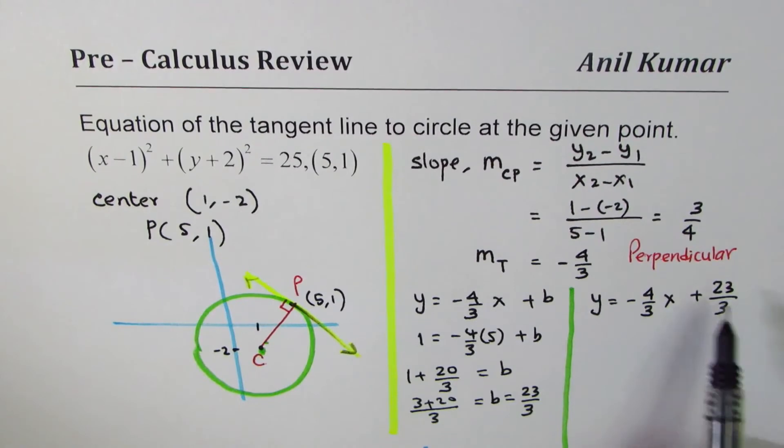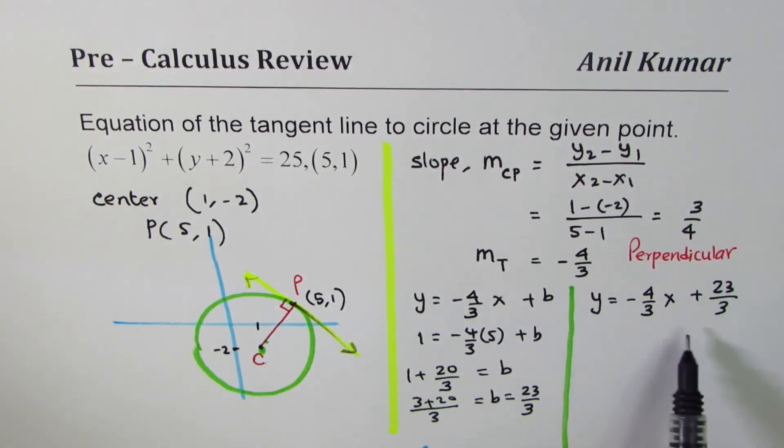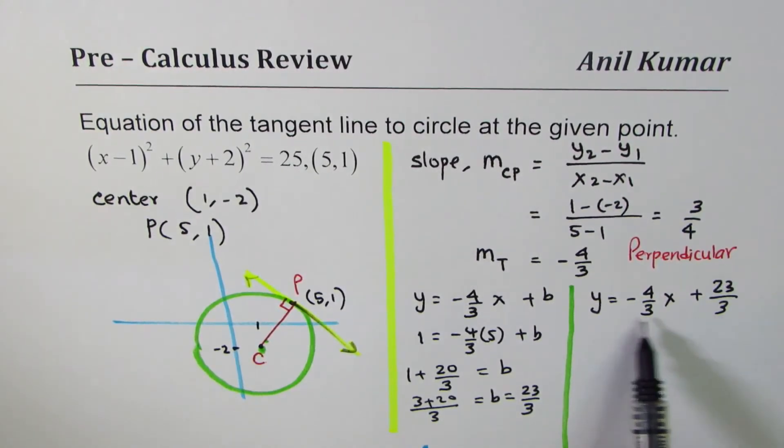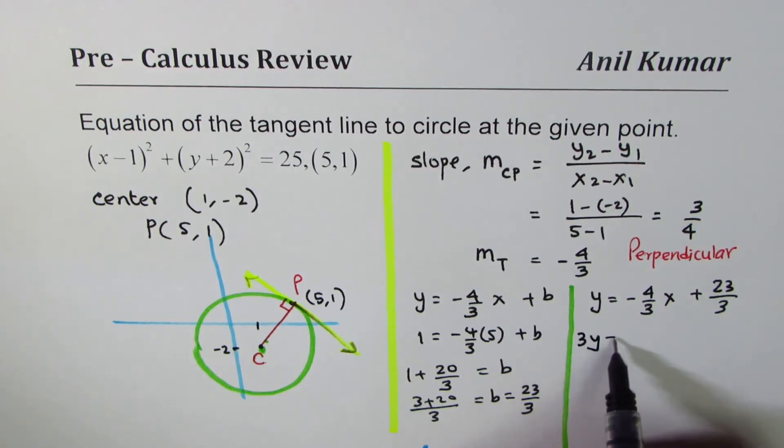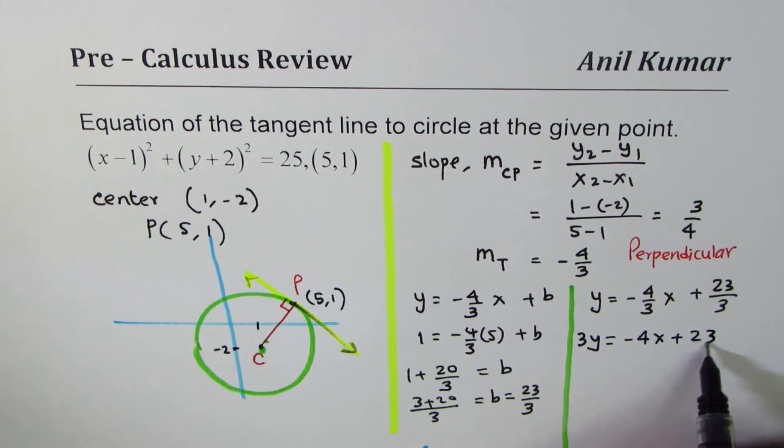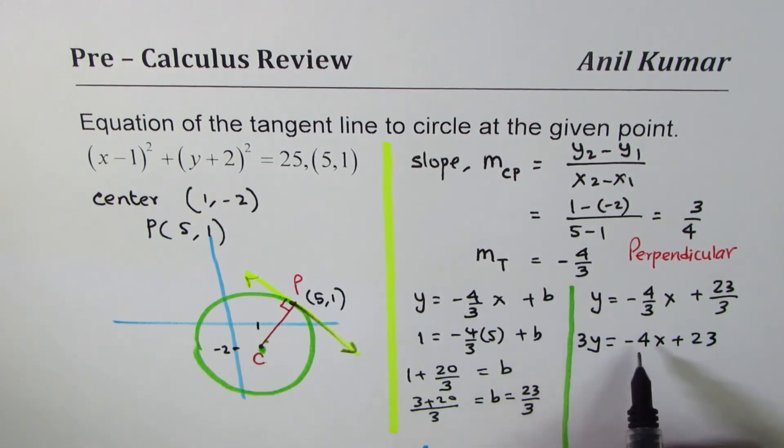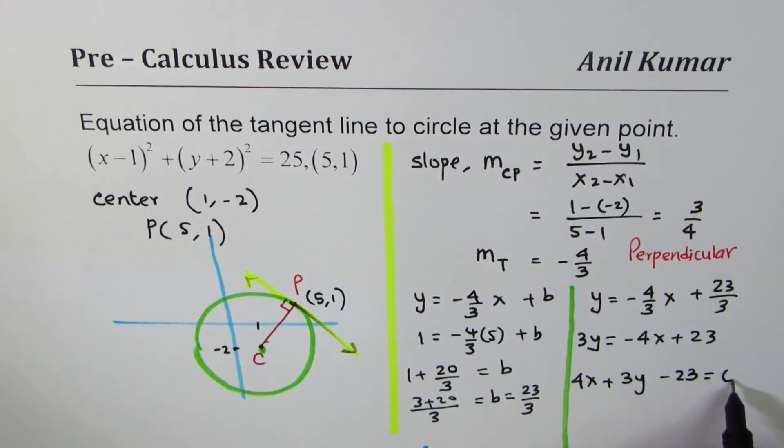If the question is to write this in standard form, you should know that technique also. So we just need to bring all the terms on one side. We can multiply by 3. So we get 3y equals minus 4x plus 23. Bringing them to the left side, we want to keep the coefficient of x positive. So we get 4x plus 3y minus 23 equals 0.